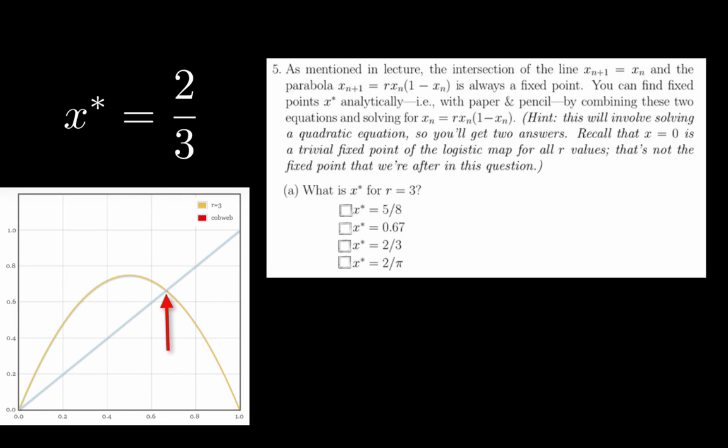We can now answer Question 5A, as we know the fixed-point at r equals 3 is at x star equals 2 thirds.